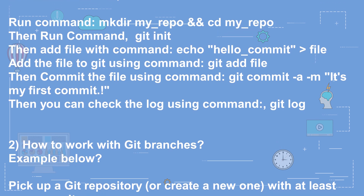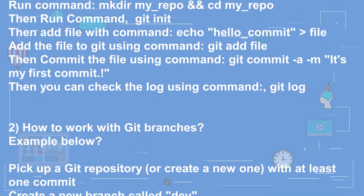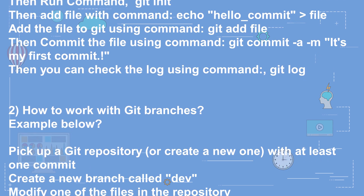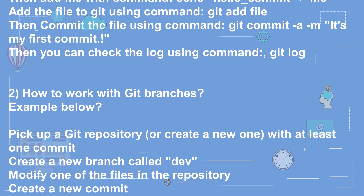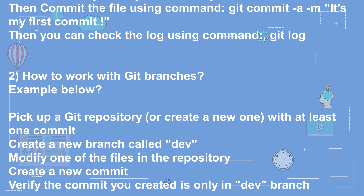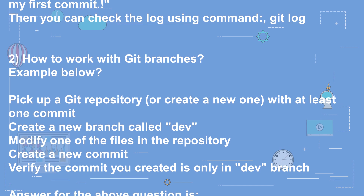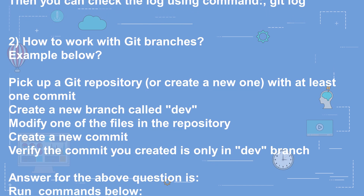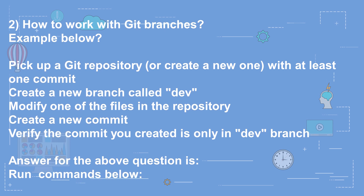Question 2: How to work with git branches. Pick or create a git repository with at least one commit. Create a new branch called 'dev', modify one of the files, create a new commit, and verify the commit is only in the dev branch.